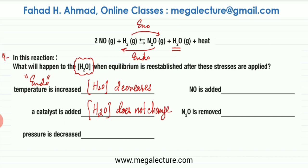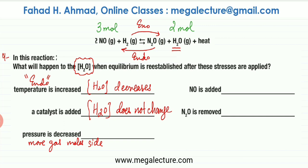Next, pressure is being decreased. When pressure decreases, the more gas mole side is favored. In this reaction, the reactant side has three moles of gas (two NO and one H2) and the product side has two moles of gas. So the more gas mole side is the backward reaction. If the backward reaction is favored, the amount of H2O would decrease because H2O gets converted back into reactants. So the concentration of H2O decreases.